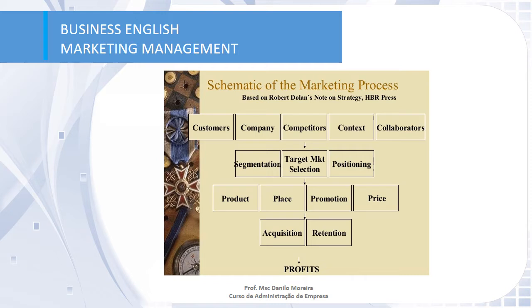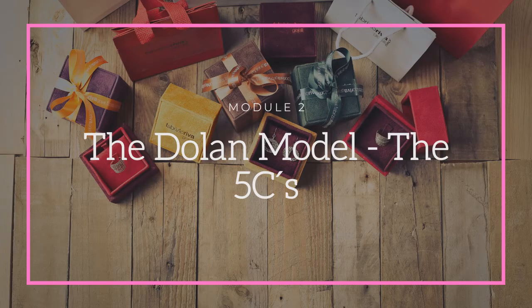We are going to study each one of them, starting with the five C's: customers, company, competitors, context, and collaborators. This is going to be our second module — the Dolan module, the five C's of marketing.